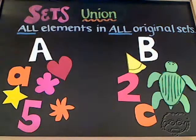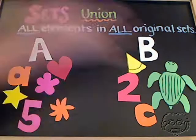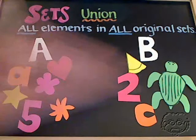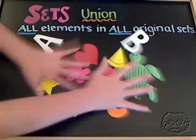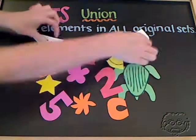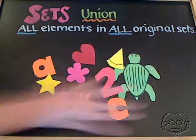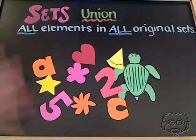If we wanted to find the union of these two sets, it would just be all these elements. This is the union of sets A and B — all of the elements contained in both sets.